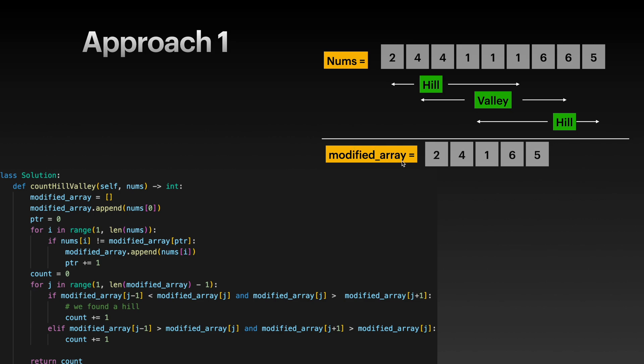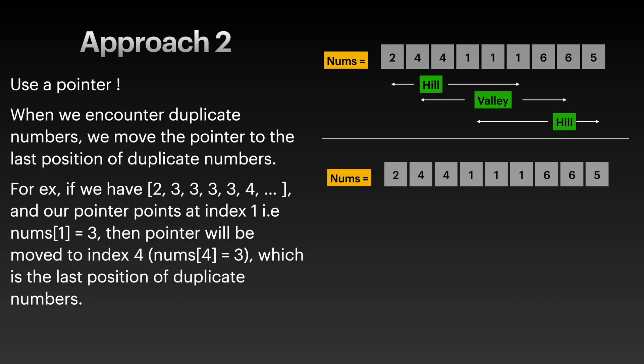That's for constructing the modified array. Then we have another for loop, and this one is working on modified_array. Basically we just check if we found the hill or not. The first case is, do we have a hill? If so, we increment our count variable by one. Else if we have a valley, then we increment our count variable by one, and then we return the count variable.